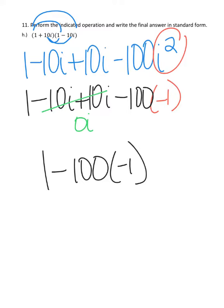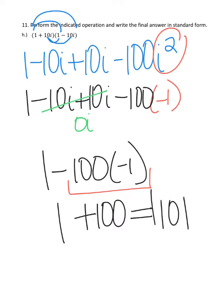Following order of operations, we do multiplication first. Negative 100 times negative 1 is positive 100. I still have my 1 at the beginning, so it's actually 1 plus 100, which equals 101.